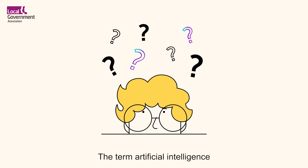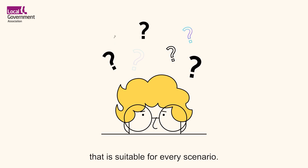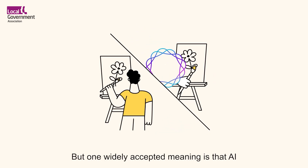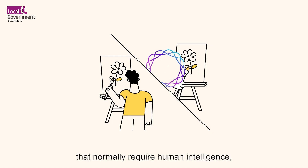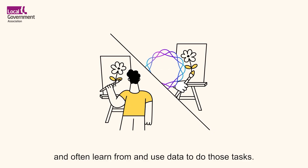The term artificial intelligence can mean a lot of things and there is no single definition that is suitable for every scenario. But one widely accepted meaning is that AI systems are machines that perform tasks that normally require human intelligence, and often learn from and use data to do those tasks.